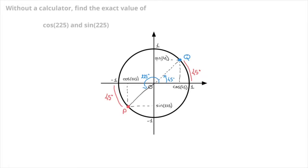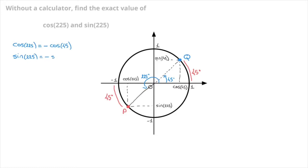We now compare the coordinates of both P and Q. Since these two points are diametrically opposite each other on the circle, their coordinates will be the exact opposites of each other. In other words, the vertical coordinate of P will be the opposite of the vertical coordinate of Q, and similarly the horizontal coordinate of P will be the opposite of the horizontal coordinate of Q. That allows us to state that cosine of 225 equals negative cosine of 45, and sine of 225 equals negative sine of 45.